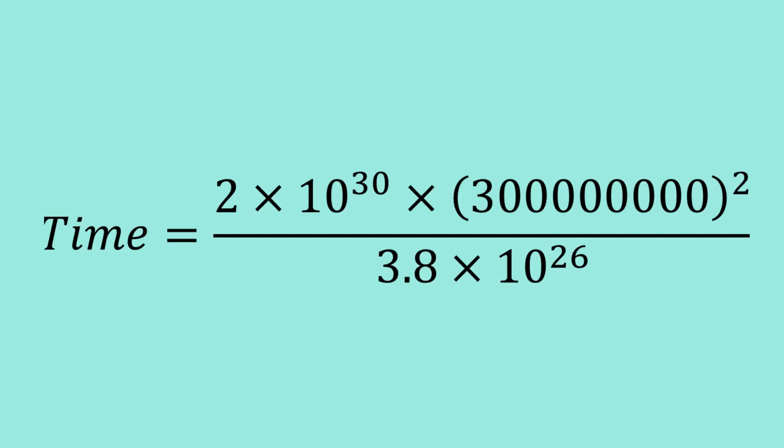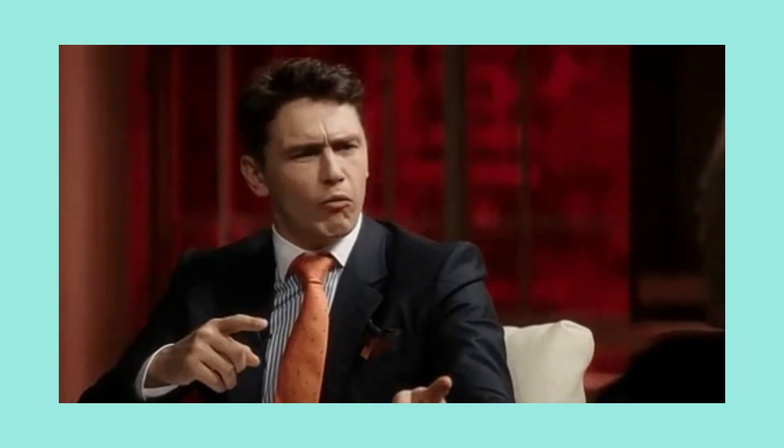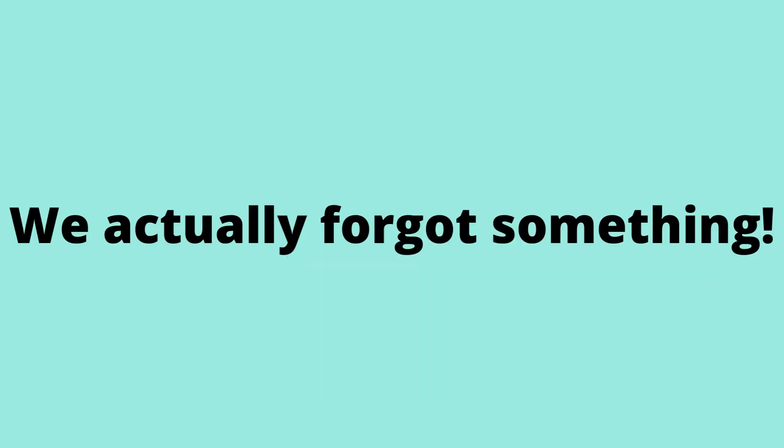Therefore, the time becomes 2 times 10 to the power 30 times 300 million squared divided by 3.8 times 10 to the power 26. The time that we will get is in seconds, which when converted to years, we get almost 15 trillion years. That is a lot. It is not accurate, right? Sun cannot have enough fuel to run its reactions forever. Alternatively, it must be of a greater mass. So wait, where did we go wrong? We actually forgot something.